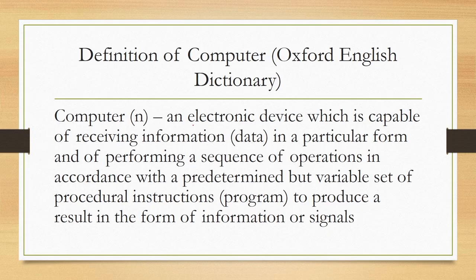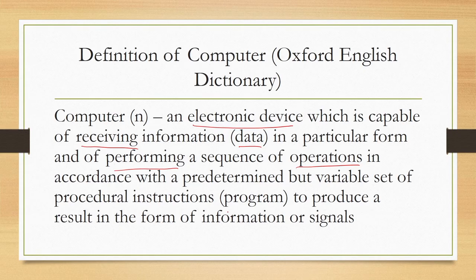To answer this question, let us first go by the definition of a computer. What is a computer? According to the Oxford English Dictionary, a computer is an electronic device which is capable of receiving information or data in a particular form and of performing a sequence of operations in accordance with a predetermined but variable set of procedural instructions, also known as a program, to produce a result in the form of information or signal. In a nutshell, a computer takes some input, applies some program to convert it to some output, and the program is pre-stored somewhere.